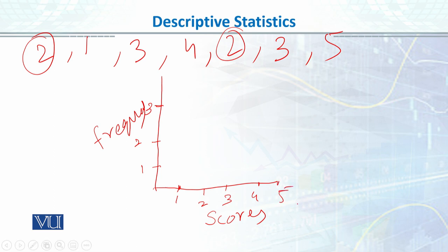These are our scores. One student scored 1, two students scored 2, and we count and mark the bars for each score value. We count the frequencies for each score and draw the corresponding bars: 1, 2, 3, 4, 5. So this is called a simple histogram.